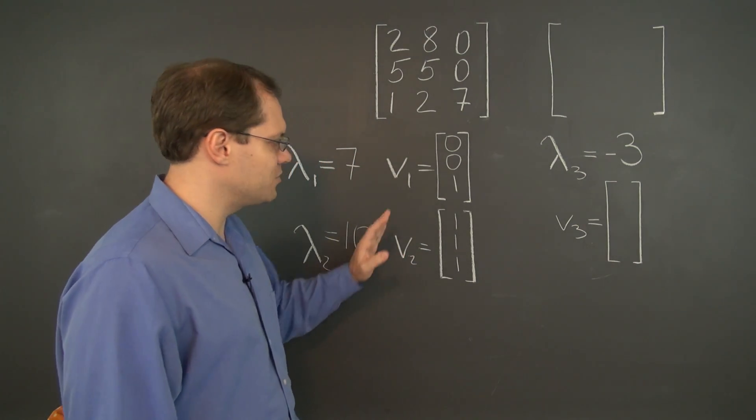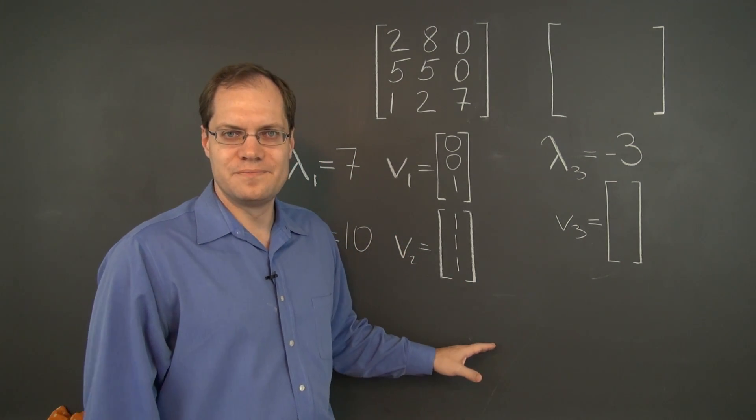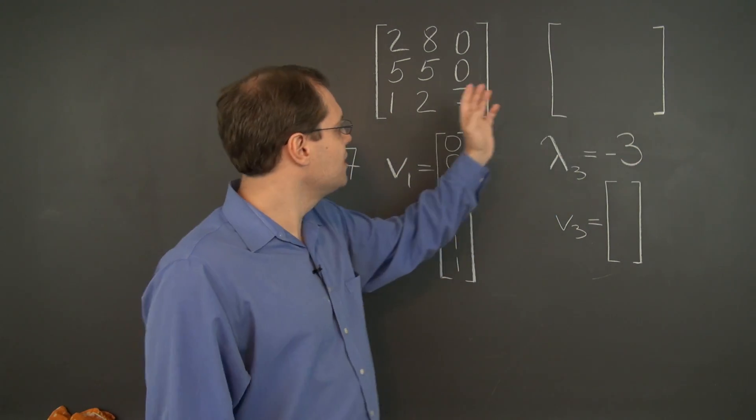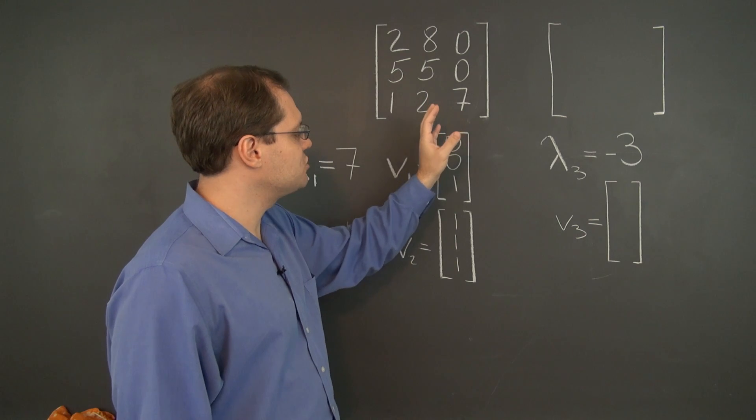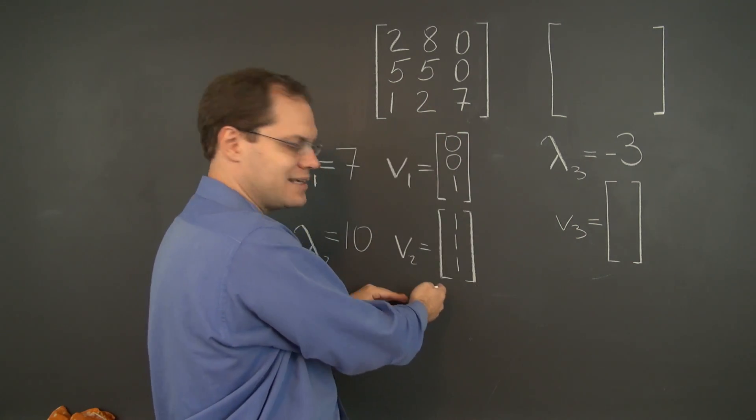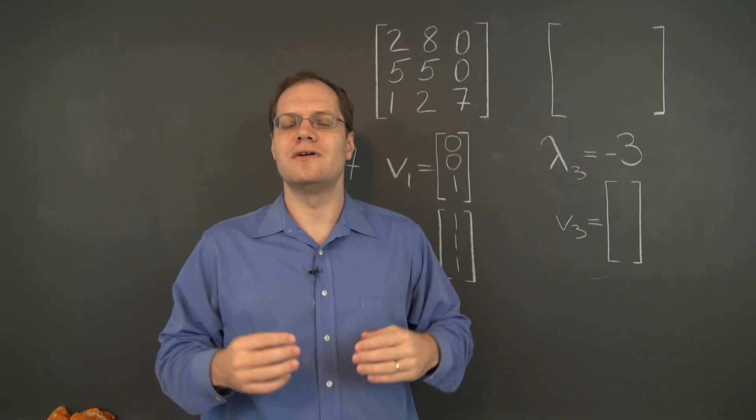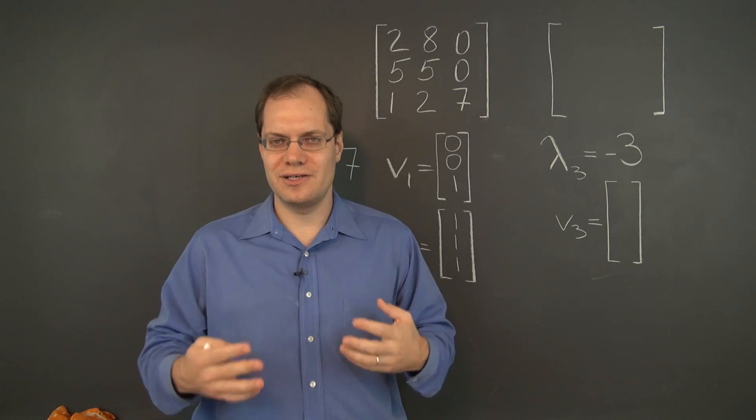So it's kind of amazing how we did almost no work at all, and we can be completely sure that this is an eigenvalue of the matrix. Even though by just looking at the matrix without identifying the other eigenvalues, there is no evidence whatsoever that would suggest that negative 3 is an eigenvalue.